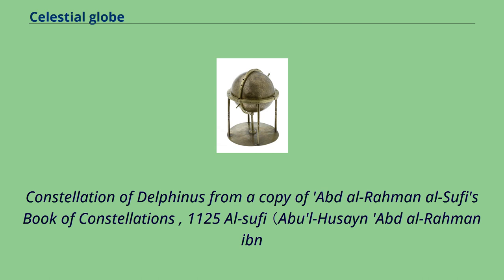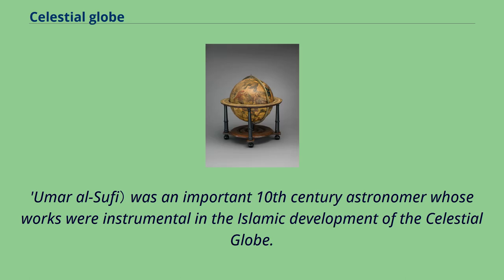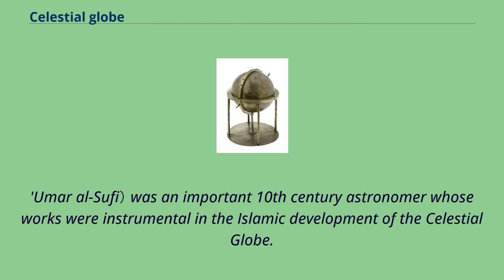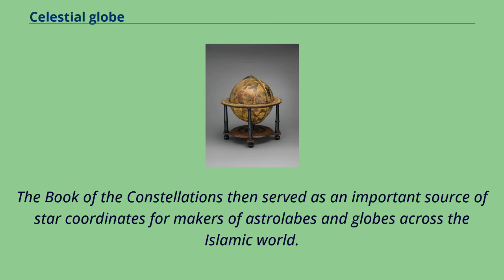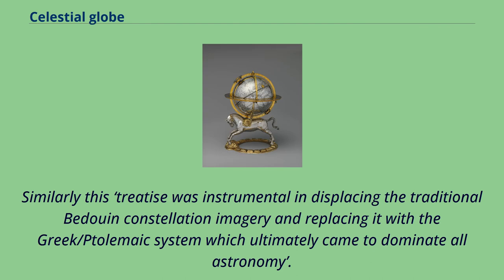The constellation of Delphinus from a copy of Abd al-Rahman al-Sufi's Book of Constellations, 1125. Al-Sufi — Abu'l-Husayn Abd al-Rahman ibn Umar al-Sufi — was an important 10th-century astronomer whose works were instrumental in the Islamic development of the celestial globe. His book The Book of the Constellations was a description of the constellations combining Greek/Ptolemaic traditions with Arabic/Beduin ones, and served as an important source of star coordinates for makers of astrolabes and globes across the Islamic world, ultimately displacing traditional Beduin constellation imagery in favor of the Greek/Ptolemaic system.